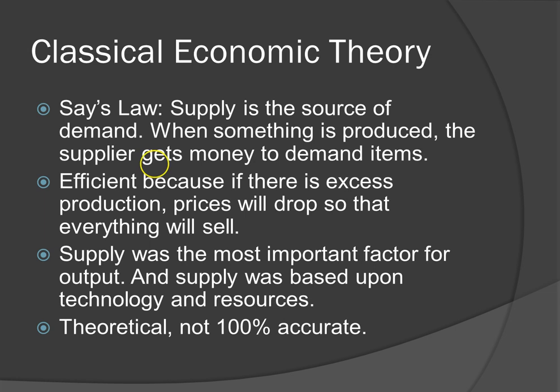There are many schools of economic thought, and one such school is called classical economics. Classical economics bases its theories on Say's Law, which states that supply is the source of demand. Basically, it means that when suppliers sell stuff, they will get money to buy other stuff, which creates demand. If they have trouble selling their products, sellers will drop their prices and everything will sell. Classical economics also states that supply is the most important factor in determining the output for a good.